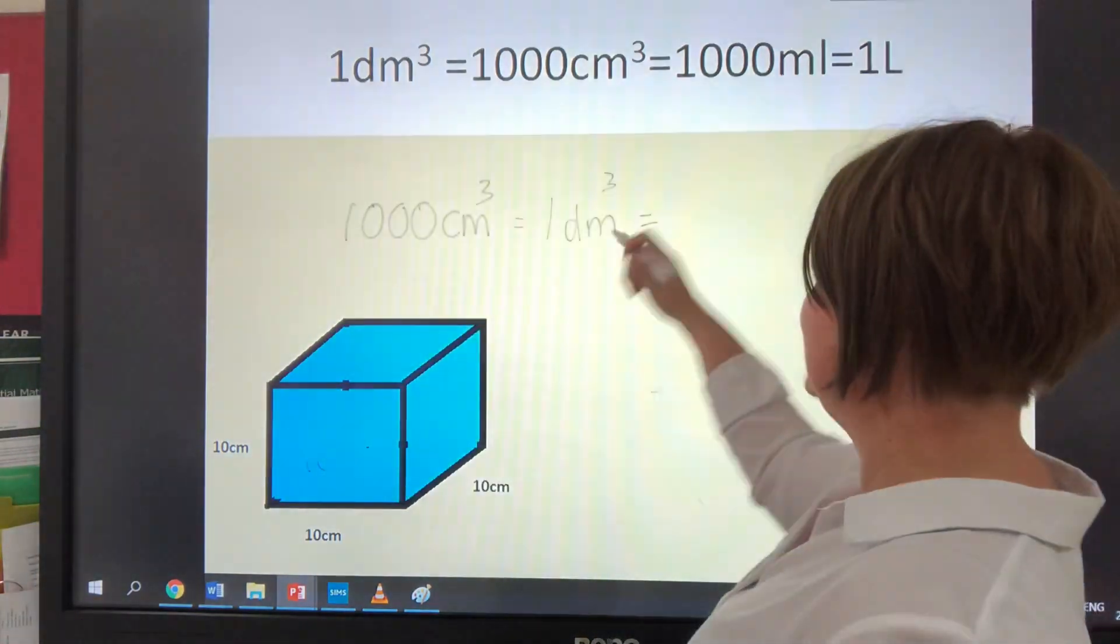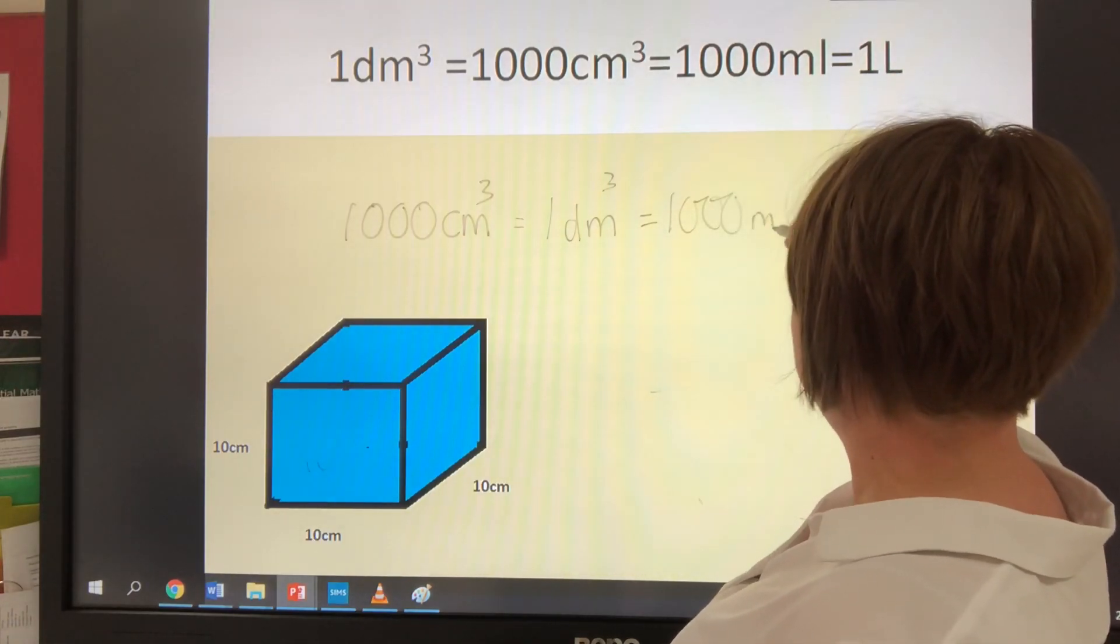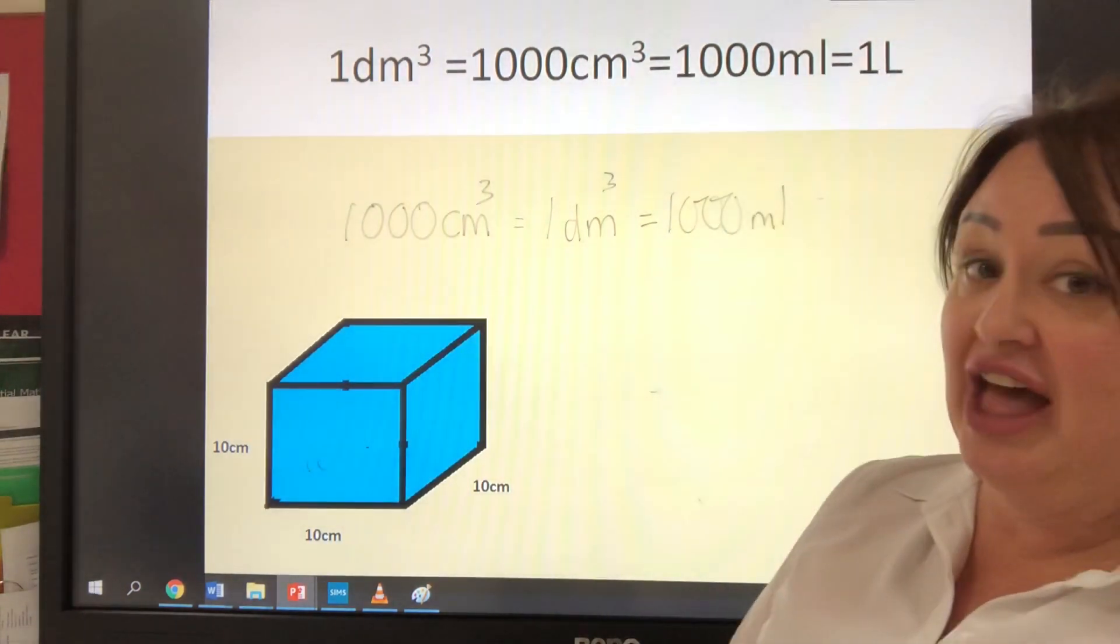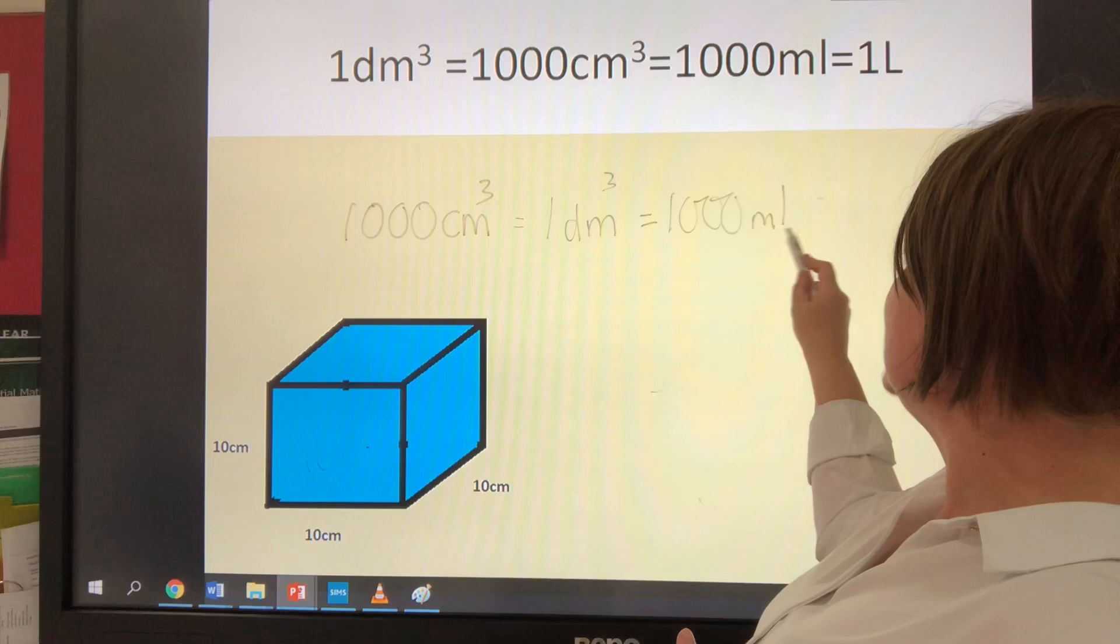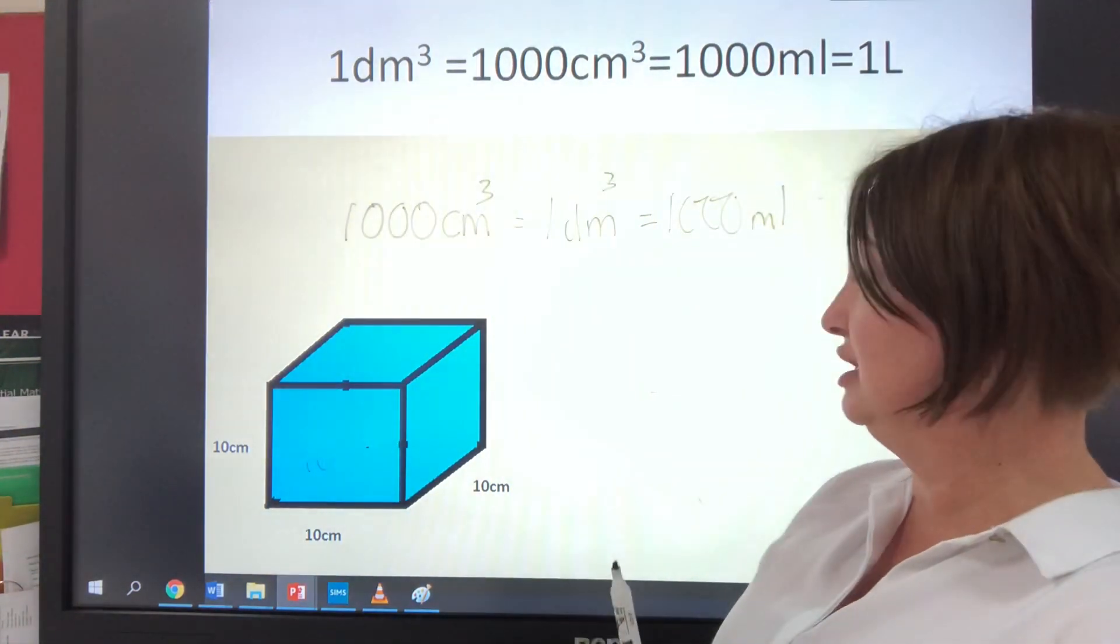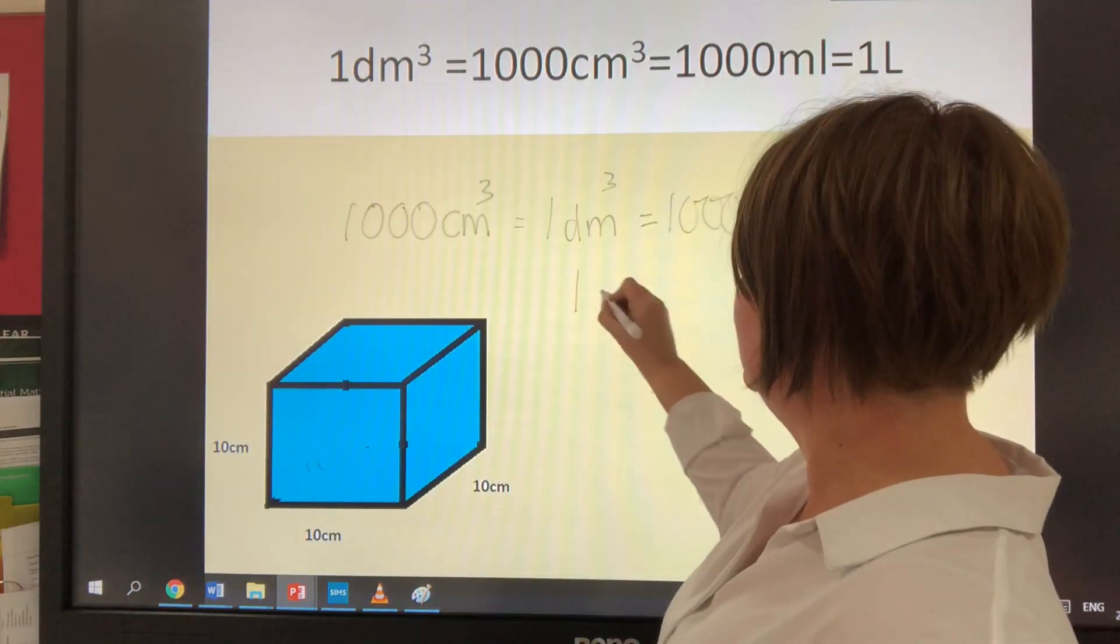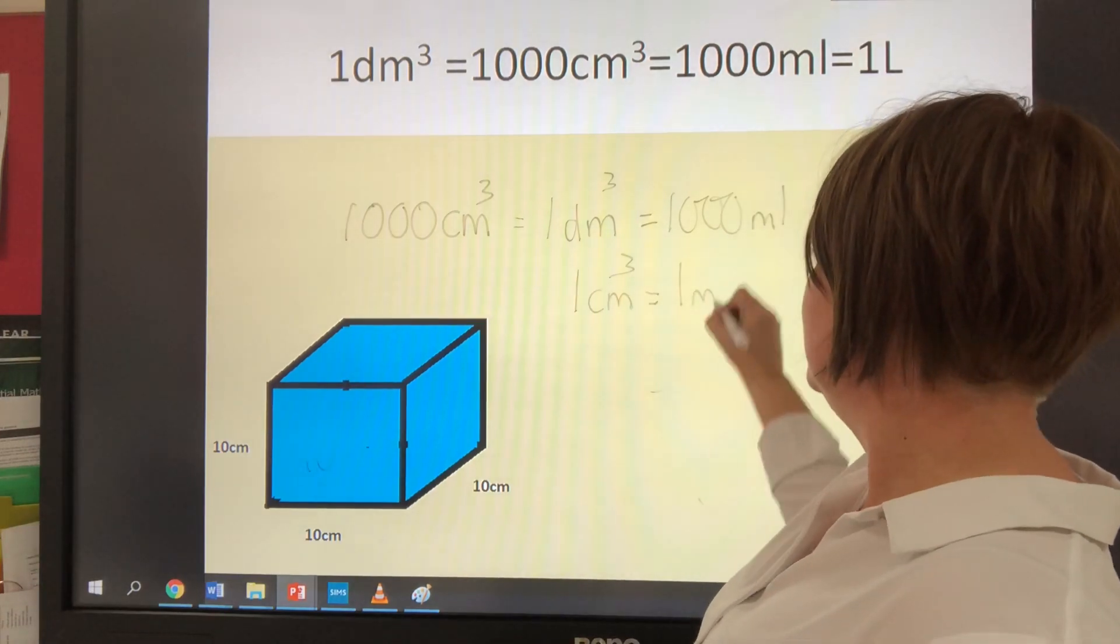So now I can say that this equals a thousand millilitres. We don't have the three on there because we don't have to show it's a volumetric measurement because the litre bit there tells us it's a three-dimensional measurement. And the takeaway message is that one centimetre cubed is equal to one milliliter.